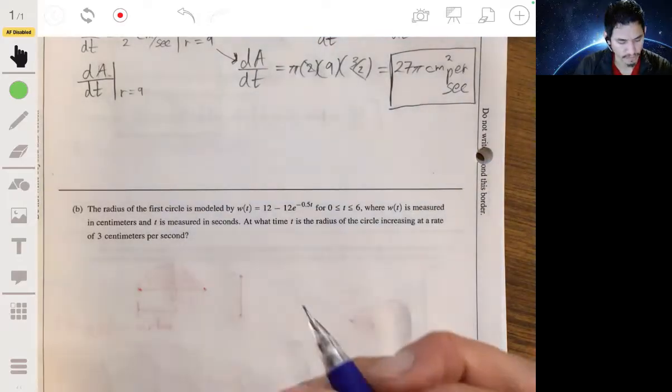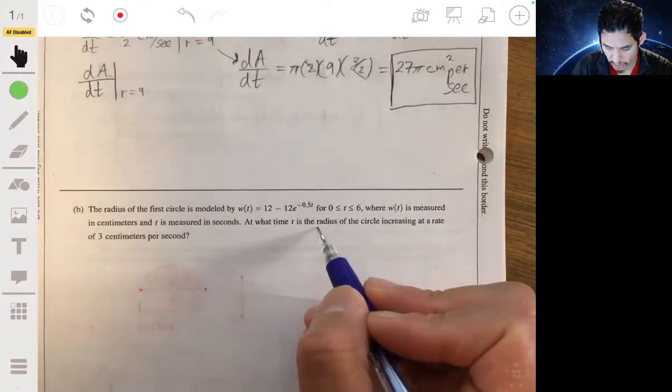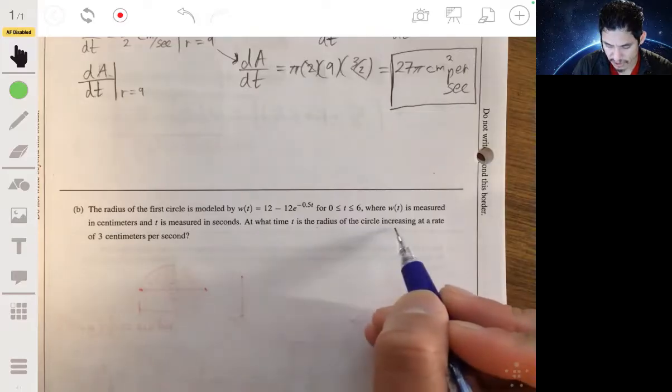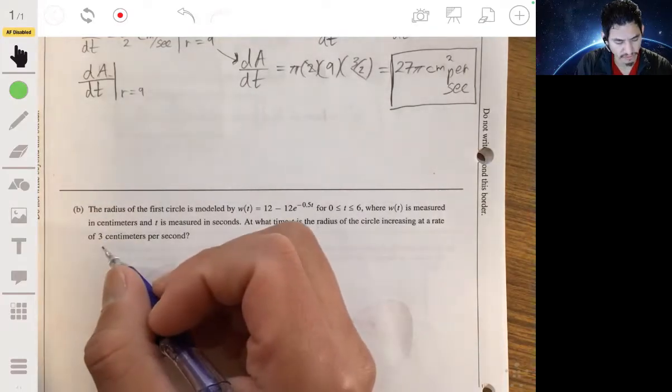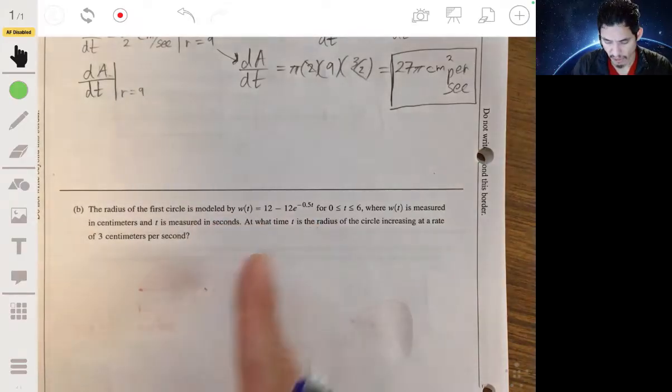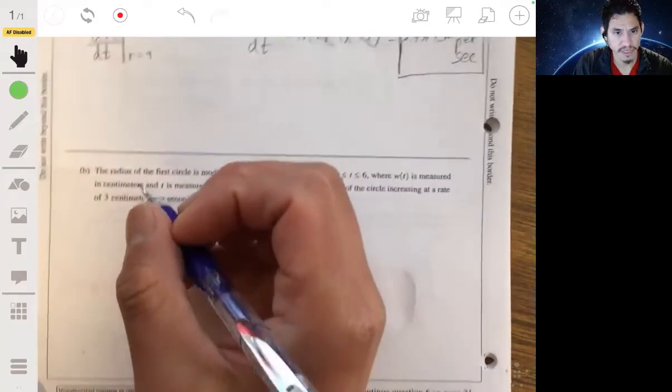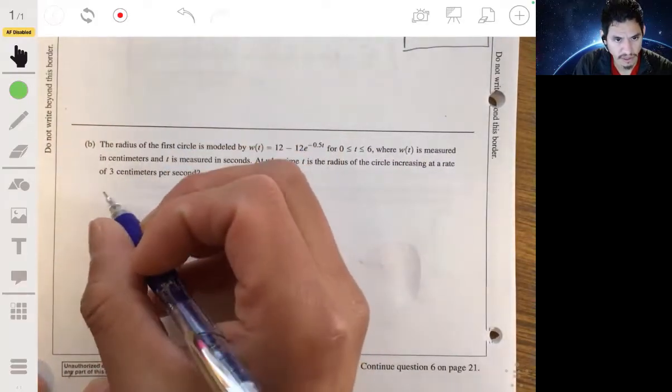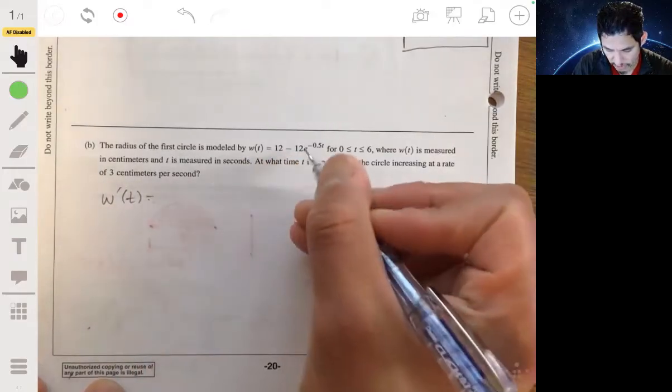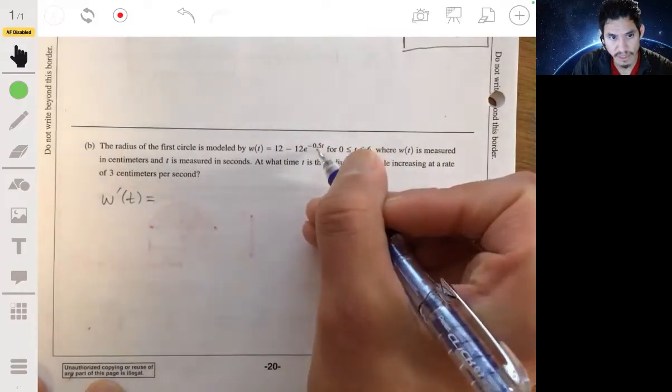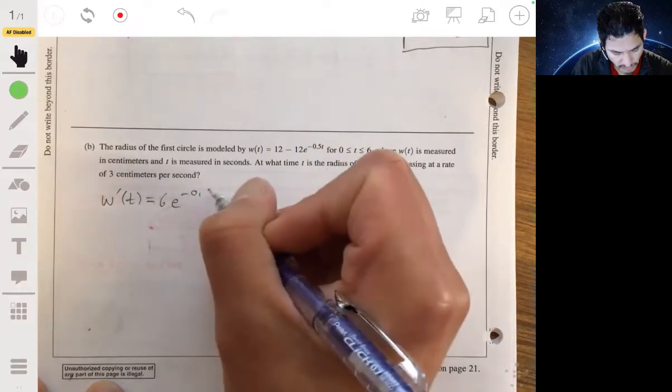Okay, so the radius is increasing at a rate of 3 centimeters per second. So we want to solve for some value of t. Now, w(t) is this, so then w'(t) will be the derivative of this, which would be -0.5 times -12 or positive 6e^(-0.5t).